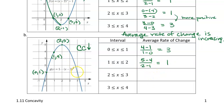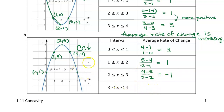For the interval from 2 to 3, the point is (3, 4). The average rate of change is (4 − 5) / (3 − 2), which is negative 1. For the last interval from 3 to 4, the point is (4, 1). The average rate of change is (1 − 4) / (4 − 3) — change in y over change in x — which is negative 3.